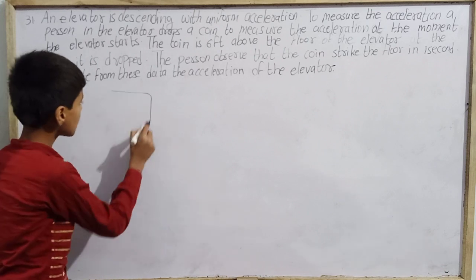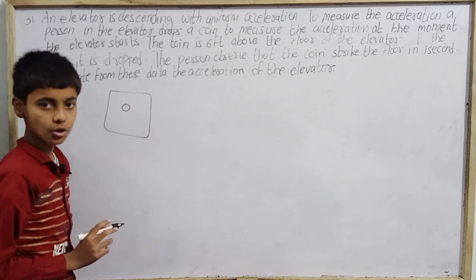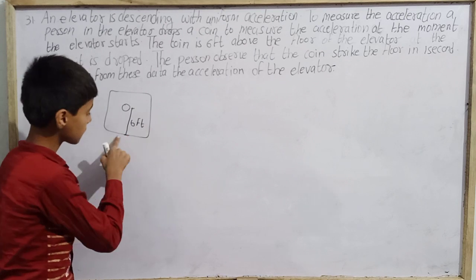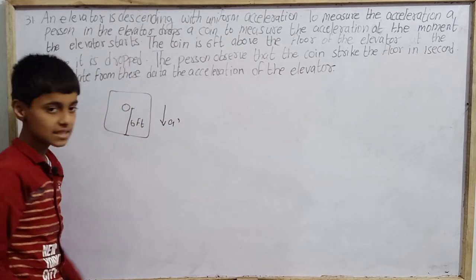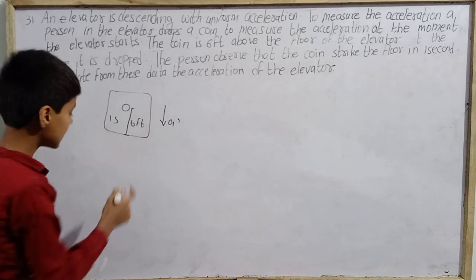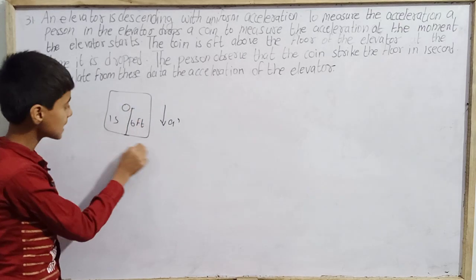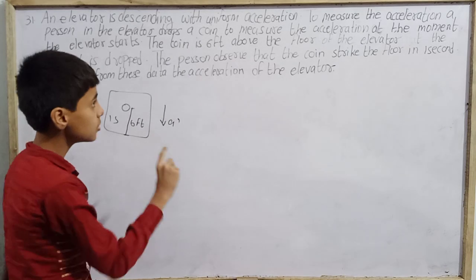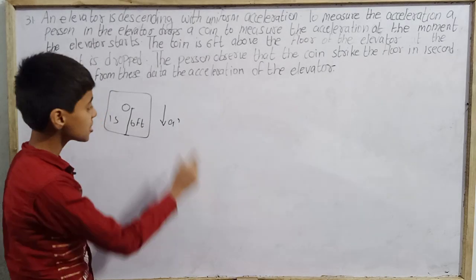Suppose you have an elevator here. I am standing with a coin and this distance from the coin to the floor of the elevator is 6 feet. Suppose the whole elevator is going down, and in one second the coin reaches the floor of the elevator. We need to find the acceleration of the elevator.